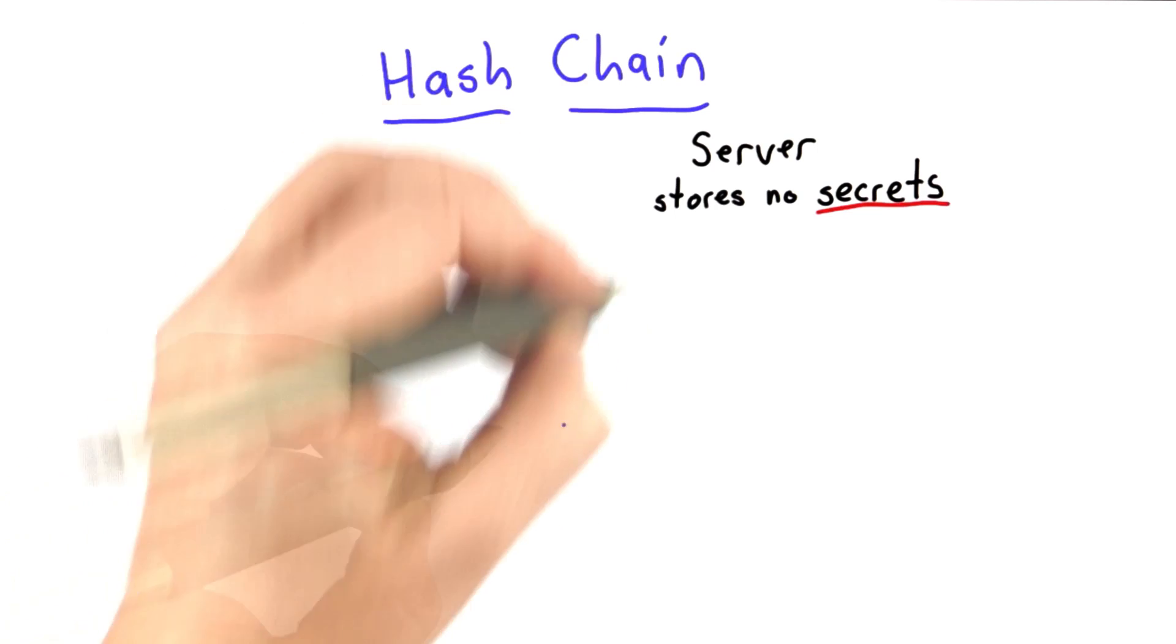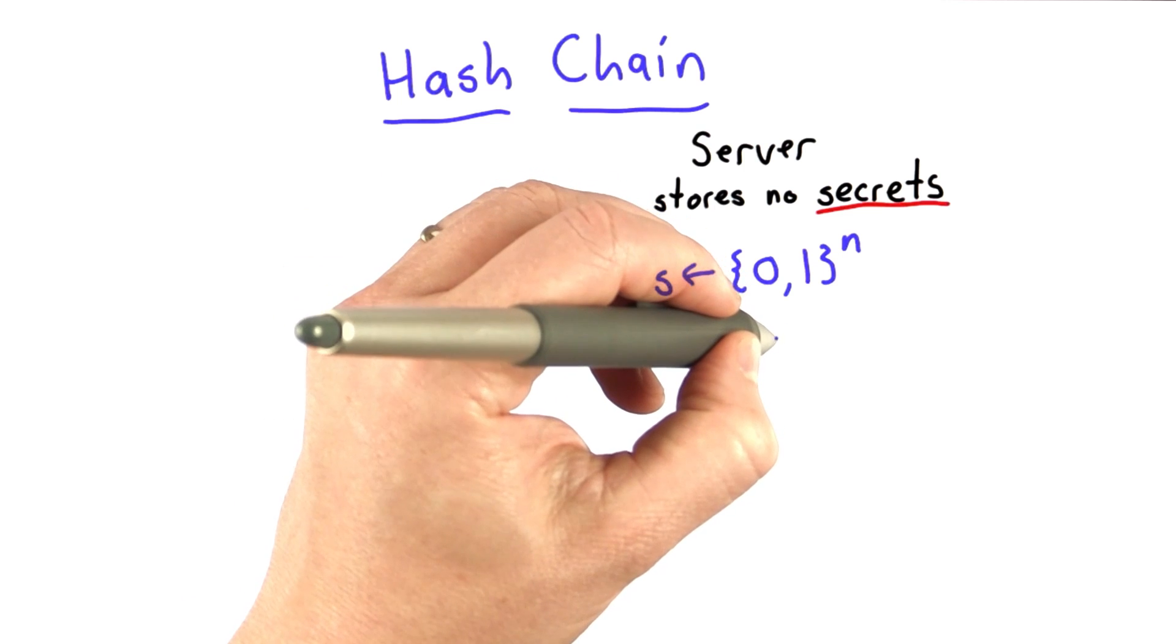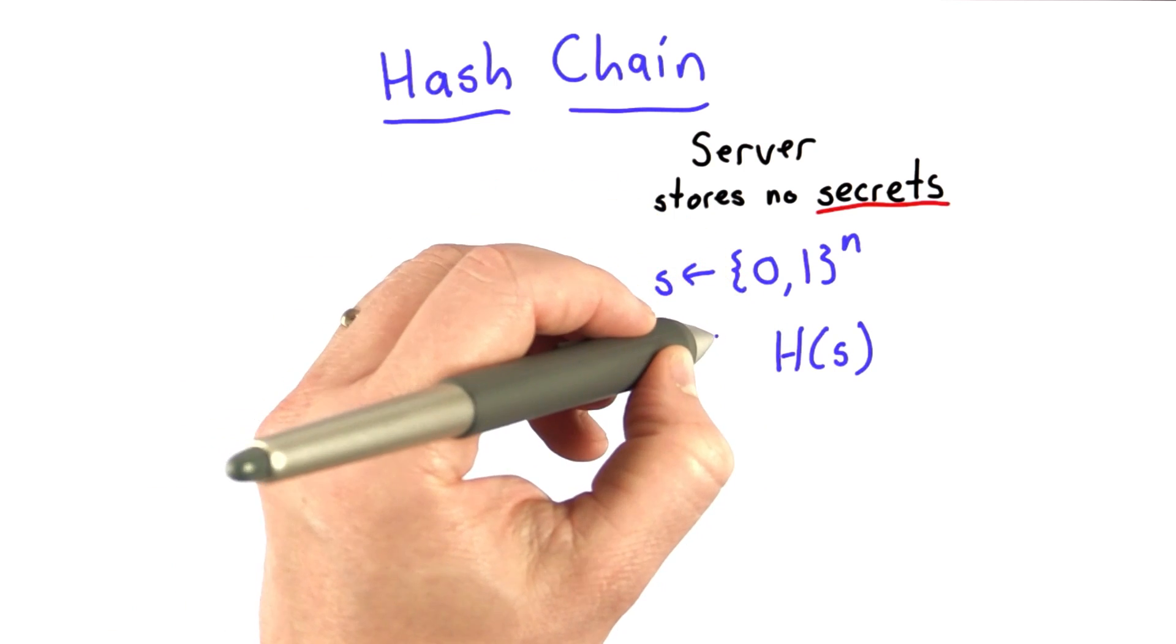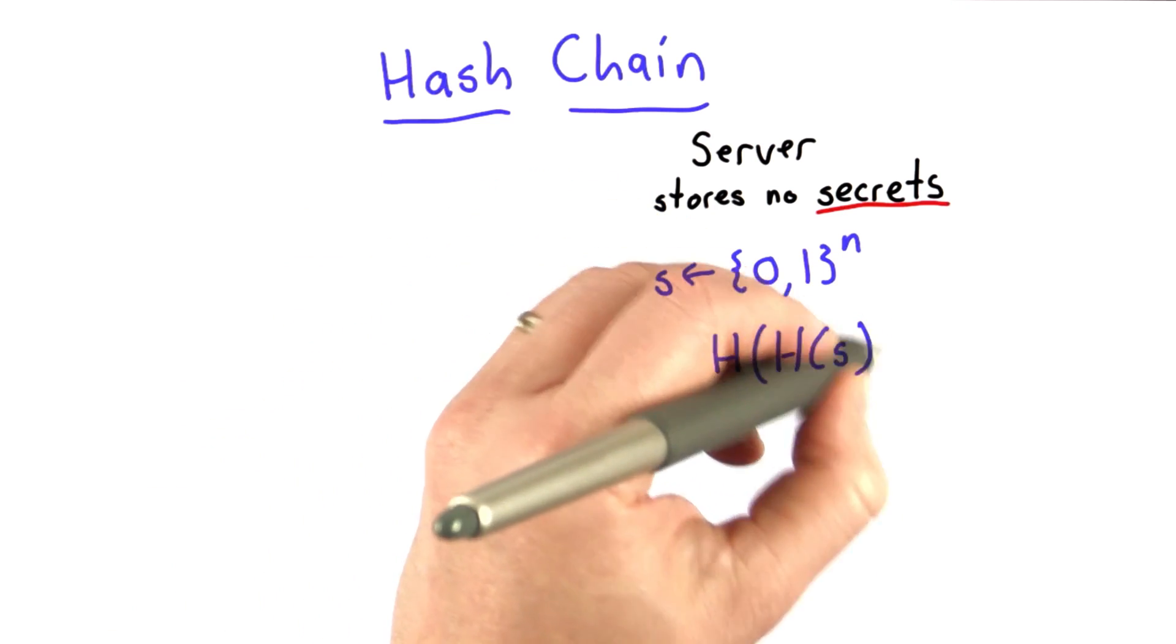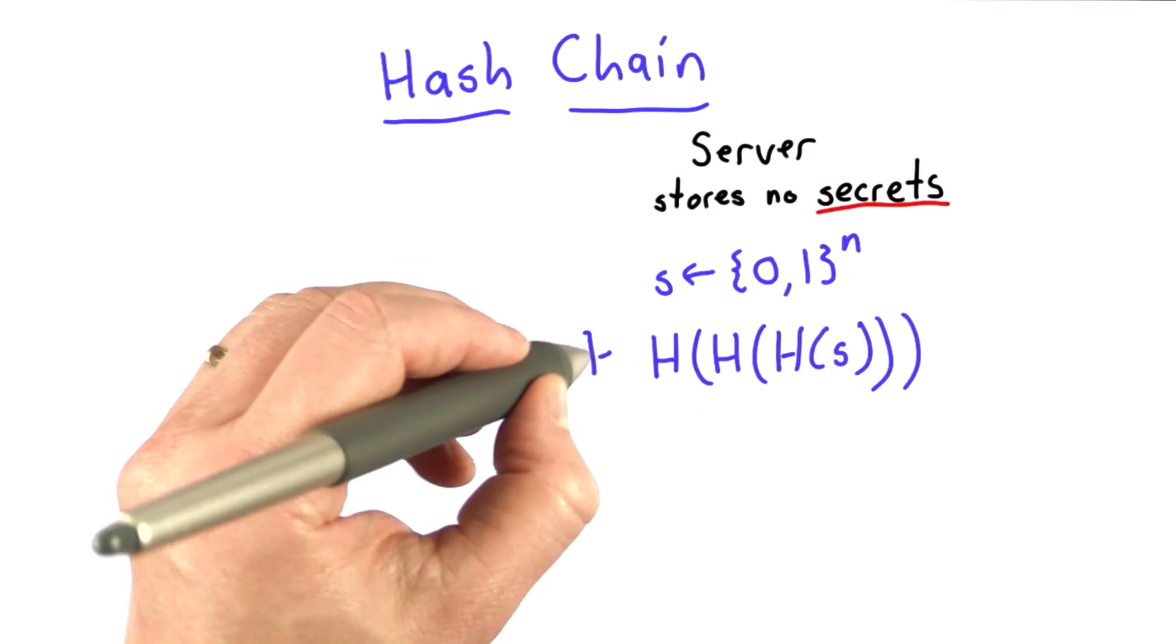So here's the idea of how to do this. We're going to start by selecting some secret, and then we're going to compute the hash of that secret, and then we're going to do that again. We're going to compute the hash that we got for the first time as the input, and we're going to keep computing hashes here.